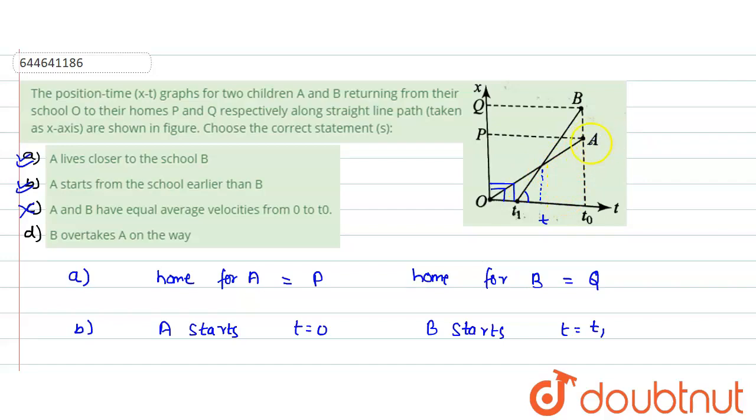Now at t equals certain time, about this time t2, let's say t2, so these both are crossing. After that, A is traveling at a farther distance as compared to B. So we can say that B overtakes A on the way at a time t2. So this statement is also correct. So correct options are A, then B, and then D. So hope you have understood the solution. Thank you.